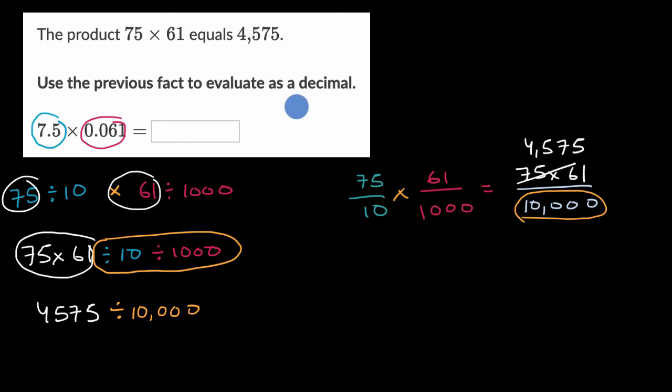Now they want us to evaluate it as a decimal. We've now expressed it as a fraction, and I still haven't fully evaluated this yet. So we really want to think about this as 4,575 ten-thousandths. And you can see that very explicitly here.